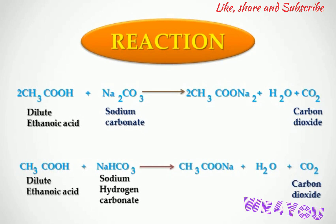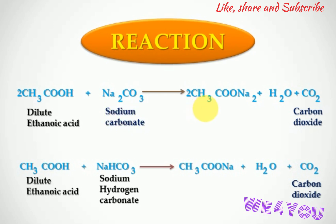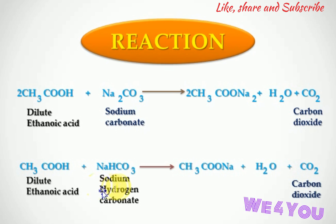Reaction 1: Dilute ethanoic acid (CH3COOH) plus sodium carbonate (Na2CO3) gives sodium acetate (CH3COONa) plus water plus carbon dioxide (CO2). Reaction 2: Dilute ethanoic acid (CH3COOH) plus sodium hydrogen carbonate (NaHCO3) gives sodium acetate plus water plus carbon dioxide.